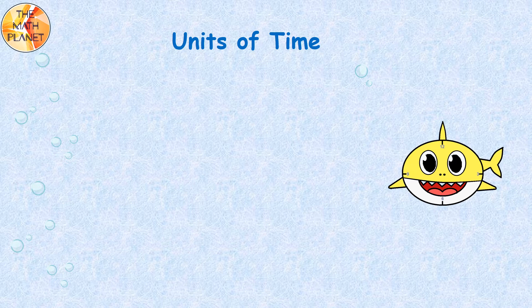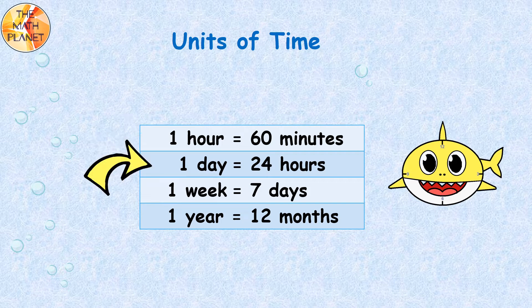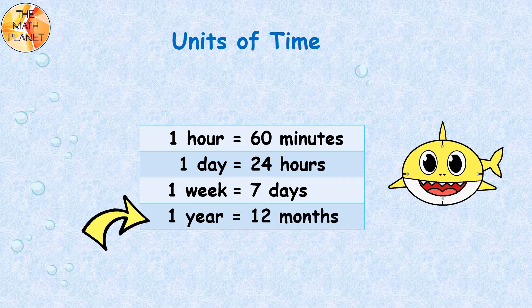The rules that we will study are: 1 hour equals 60 minutes, 1 day equals 24 hours, 1 week equals 7 days, and 1 year equals 12 months.